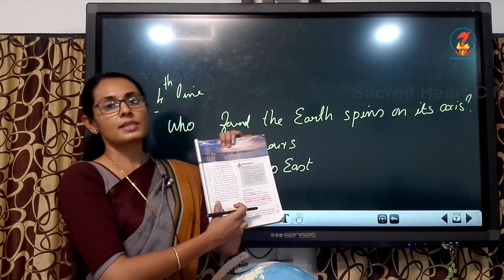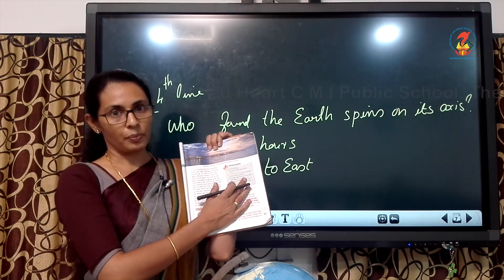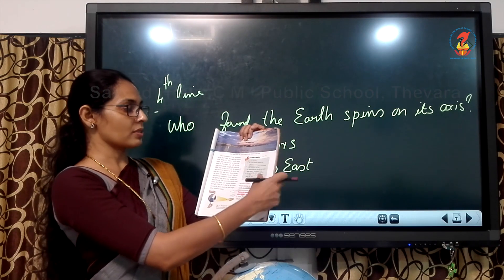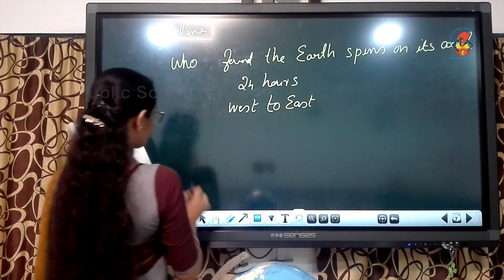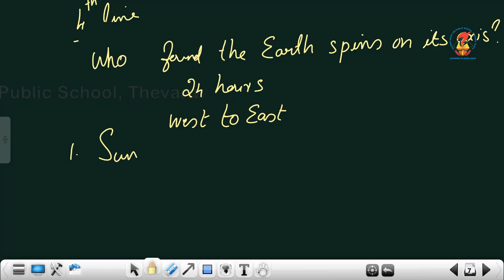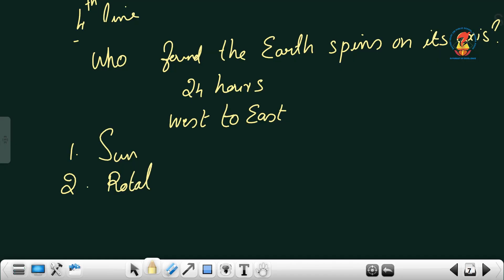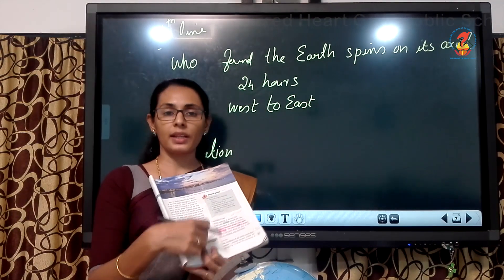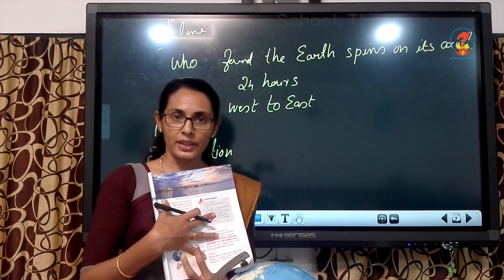Turn to page 21 — do the activity given there. The checkpoint answers: first one, the Earth moves around the dash — answer is the Sun. Second one, the dash is the movement of the Earth on its axis — answer is rotation. Find out the answers for three and four on your own. Read the chapter till what I completed today three times and find the answers. Thank you, children.